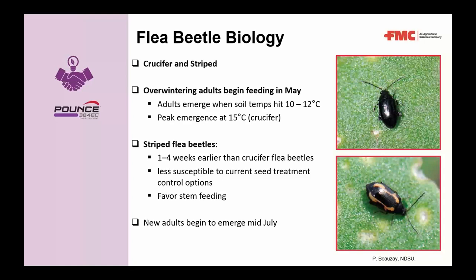Striped flea beetles as adults can emerge five to eleven days after the spring thaw begins. They're less susceptible to current seed treatment control options and favor stem feeding. Overwintered adults die off in June or July after completing egg laying. Egg to adult development takes seven weeks, and the new wave of adults emerges July to October, feeding on canola leaves, stems, and seed pods in late summer and fall.